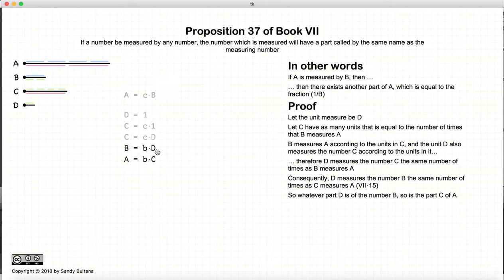So whatever part or fraction d is of b, it is the same fraction that c is of a. Now I'm quoting from Euclid's translation directly: the unit d is a part of the number b, and it is called by the same name as it.